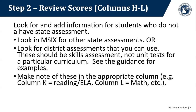Some of those examples may be somewhat outdated, but essentially you're looking for an assessment that shows if the student is at grade level for reading or math. Make note of these in the appropriate column — column K equals reading or English language arts, column L equals math. The only things we're looking for are reading/English language arts or math. We're not looking at science and social studies, so let's stick with the ones we know we can use.